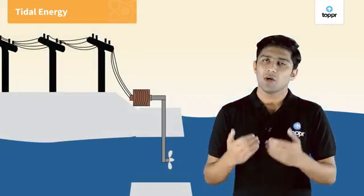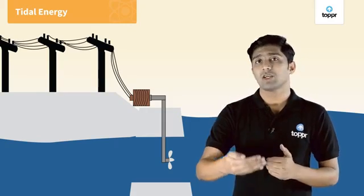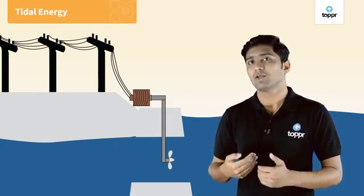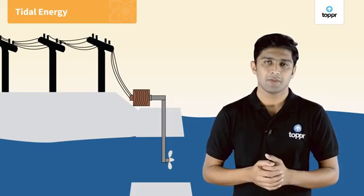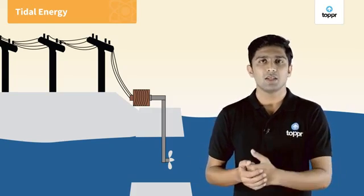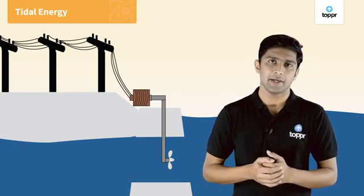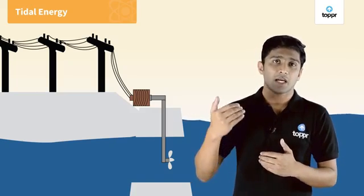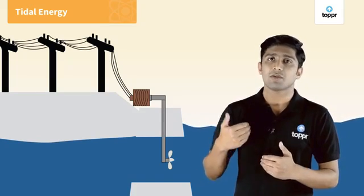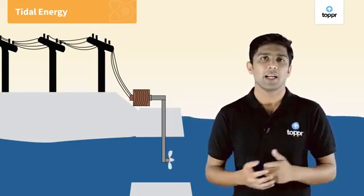Let's start with tidal energy. We all know tides happen near the seashore — water rushes up near the seashore during a high tide and runs back during a low tide. Dams are built near the seashore to collect water during a high tide. When the water runs back to the ocean, the kinetic energy of the flowing water is used to rotate a turbine to produce electricity.